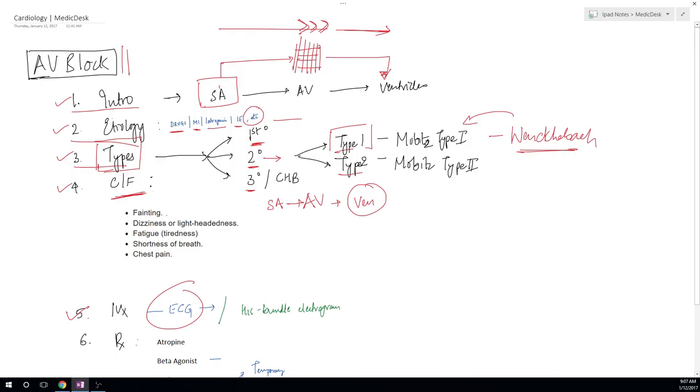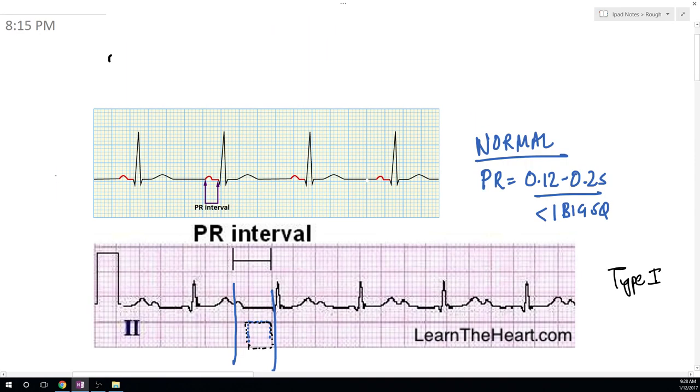Looking over the clinical features, some of them are fainting, dizziness, lightheadedness, fatigue, shortness of breath, or chest pain. Now we have many investigations, but mainly done are ECG and His bundle electrogram.